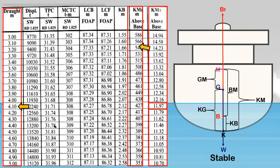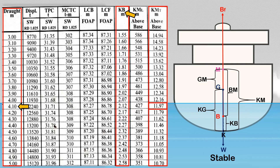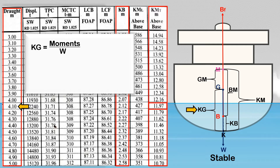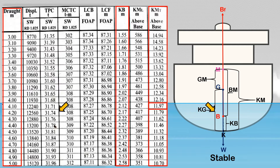You can also extract the value of KB from this column. The location of the ship's center of gravity G is always calculated depending on the ship's loading conditions, where it can be found vertically above the keel as KG, measured in meters. This is the formula to calculate KG, where moments is the total vertical moments and W is the ship's final displacement. If we can find these values, we subtract KG from KM to find the initial metacentric height, known as GM.